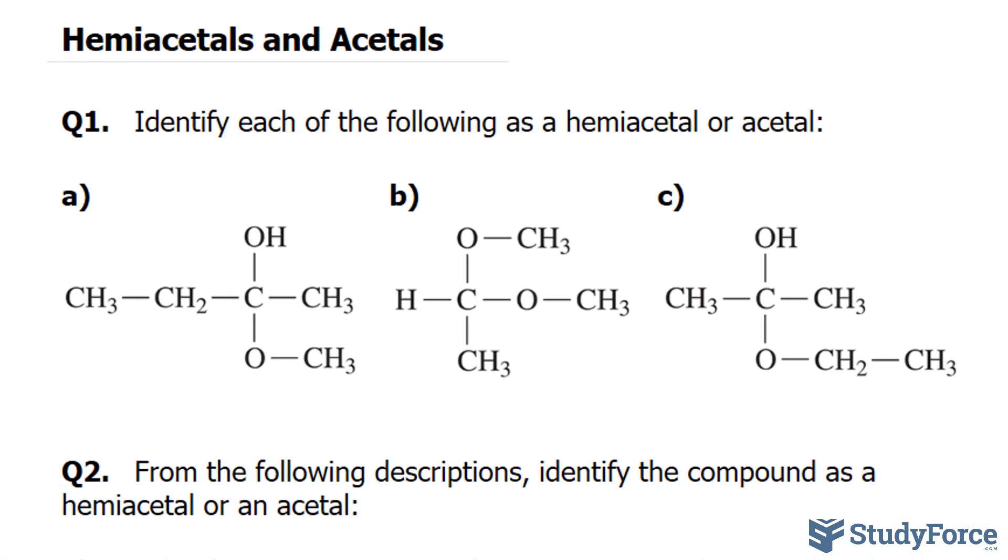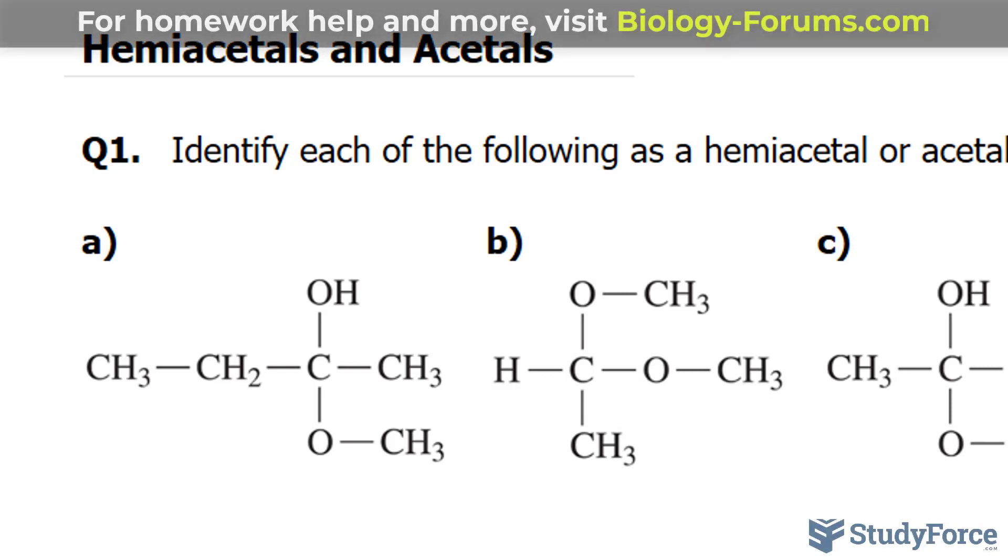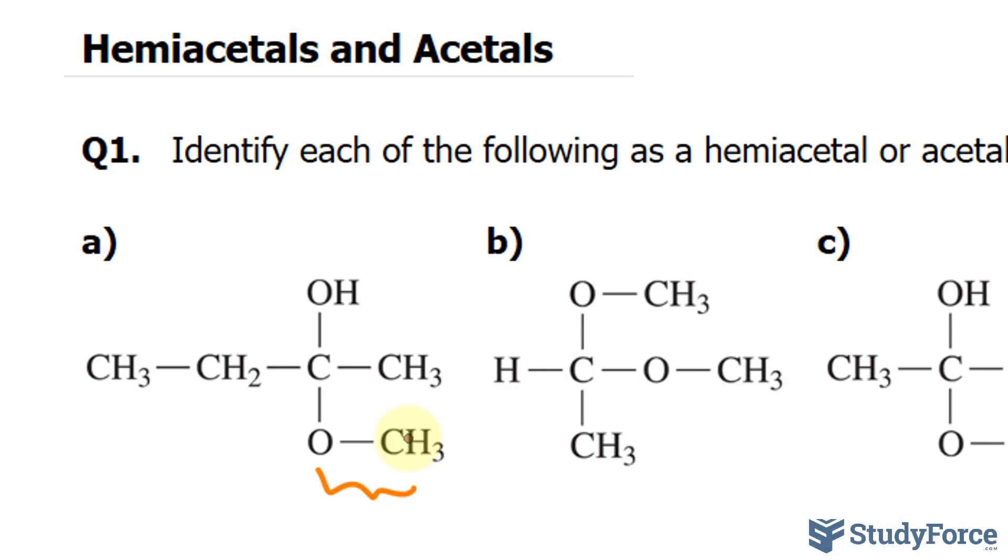We'll start with A. Let's take a look at the carbon that is bonded to an alkoxy group. This is an alkoxy group where you have carbon bonded to oxygen, and the oxygen is subsequently bonded to another carbon chain, in this case being methyl. So this right here is the alkoxy group as shown, and the carbon is also bonded to a hydroxyl. Because it's only bonded to one alkoxy group and the other part being a hydroxyl, this is a hemiacetal molecule.